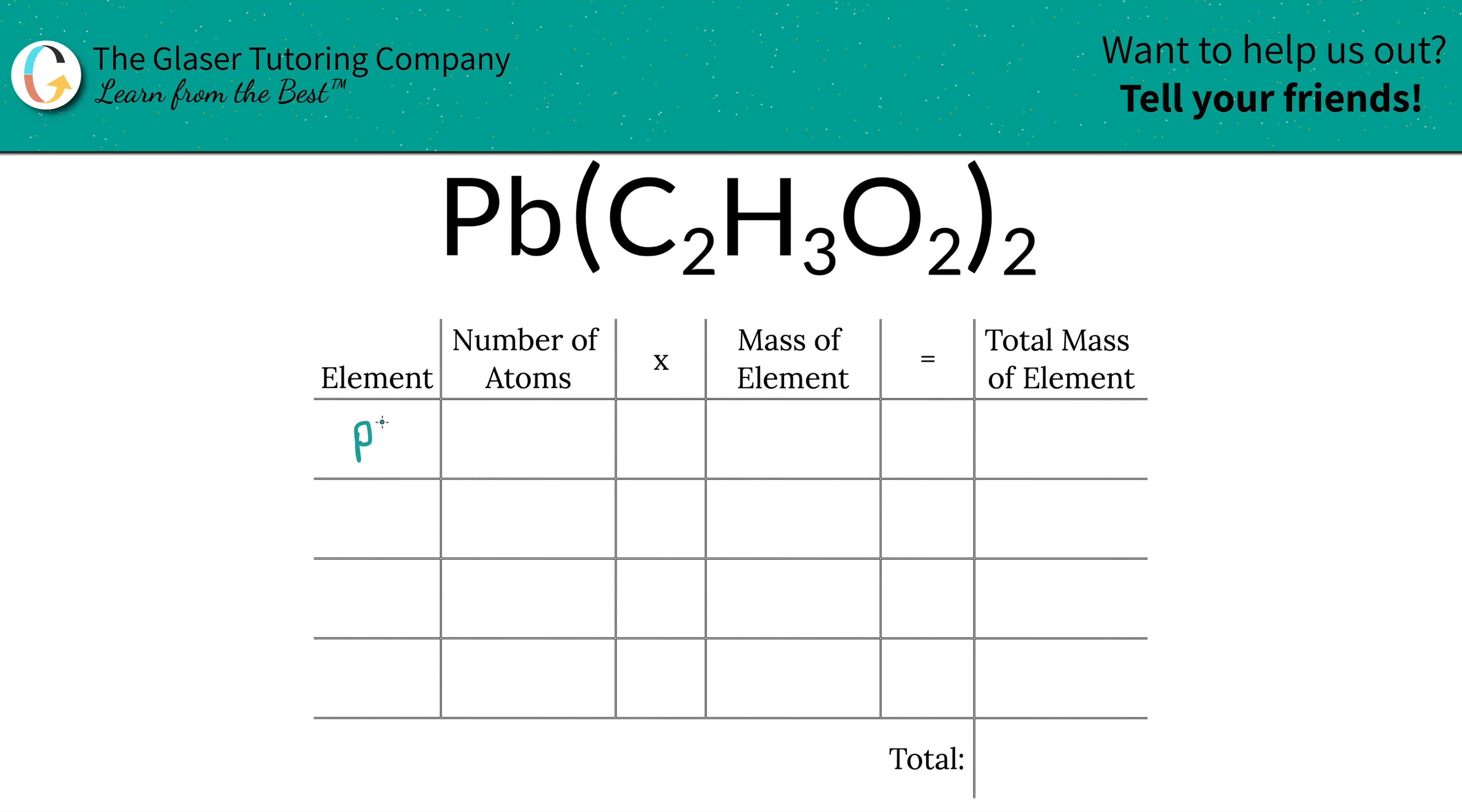So the first step is we're going to write down the elements we see in the compound. So we've got lead, we've got carbon, we've got hydrogen, and we've got oxygen.